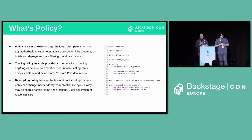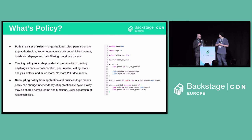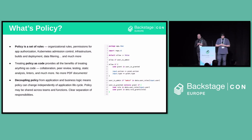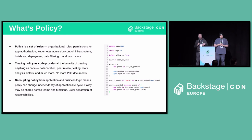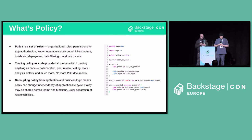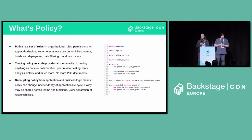Before we talk about Open Policy Agent, what is even a policy? That's a good place to start. Basically, a policy in Backstage or anywhere else is essentially a set of rules. These rules could be things like permissions for authorization or access control, Kubernetes admission control — where certain types of deployments should not be allowed unless they have a well-defined security context — or Terraform plans. Basically anywhere you can imagine wanting a set of rules, that is a place where you define a policy.